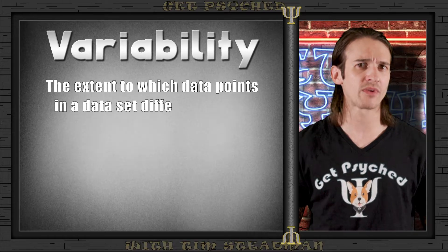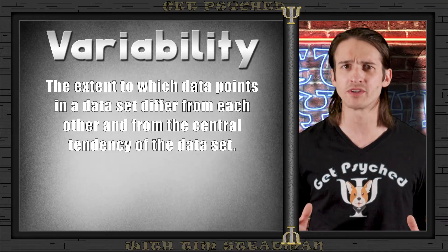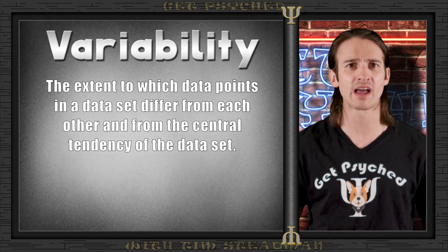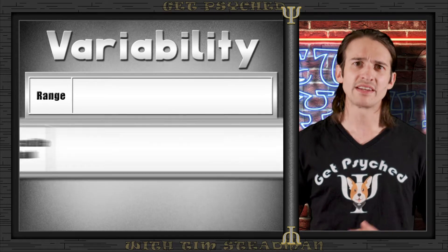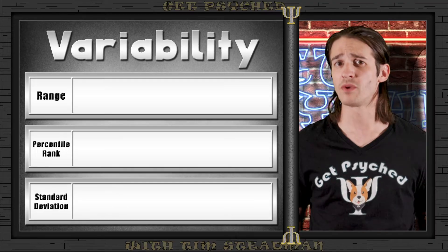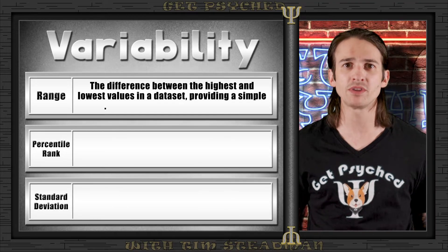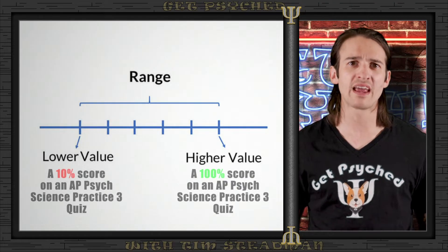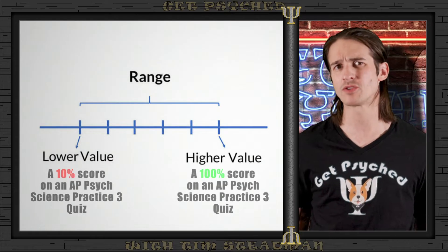Understanding different data distributions sets the stage for our next critical topic: variability in data. Variability provides insights into how spread out or closely clustered our data points are around the central value, which is crucial for interpreting the data's consistency and reliability. The three measures of variability we are going to learn about are the range, percentile rank, and standard deviation. First up, the range — which is just the difference between the highest and lowest values in our data set. The range gives us a quick snapshot of the data spread, but it doesn't tell us much about the distribution between the extremes.